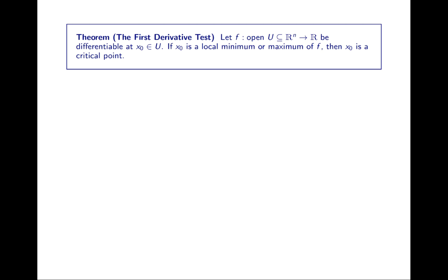This should be familiar from Calculus 1. We have the first derivative test: if f maps an open set U in Rn to R and is differentiable at x0, then if x0 is a local min or max, x0 is a critical point. Notice the direction of implication — a local min or max implies a critical point for a differentiable function, but not the other way around.